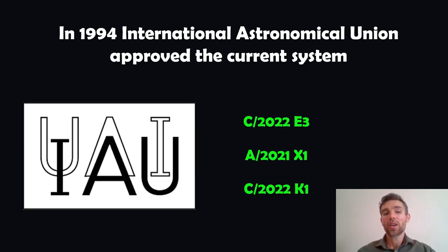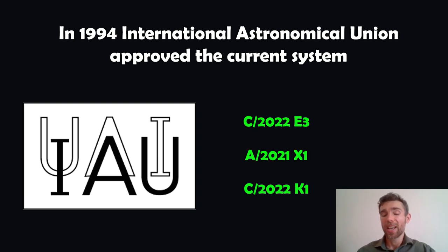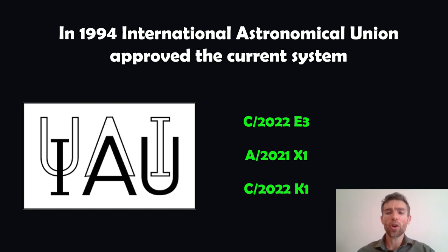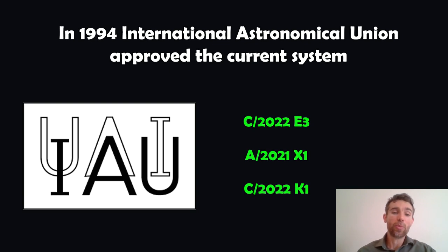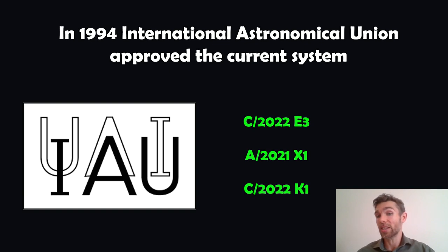In 1994, the International Astronomical Union approved the current system to name comets. They have the same for minor planets, asteroids, and that sort of thing as well. We're going to focus on the comets here. You've got what looks like a bit of a code — like C2022E3. There's a logical system for that and how they actually get the name. You don't get to decide it — it's not randomly generated. It comes about due to when it was discovered and things like that.